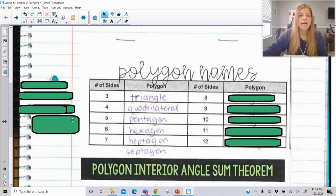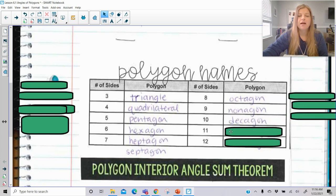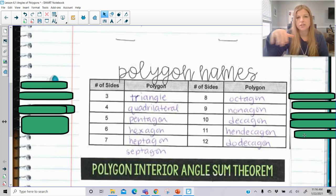Seven-sided is heptagon or septagon. You can see either spelling online if you were searching something up for a seven-sided figure. Eight is octagon. Nine is nonagon. Ten is decagon. Eleven is hendecagon. We don't often use eleven-sided figure, but that is the name of it. And twelve is dodecagon. And really what happens past twelve, if it's a thirteen-sided polygon, we just call it a thirteen-gon. So we put the number of sides dash g-o-n at the end.